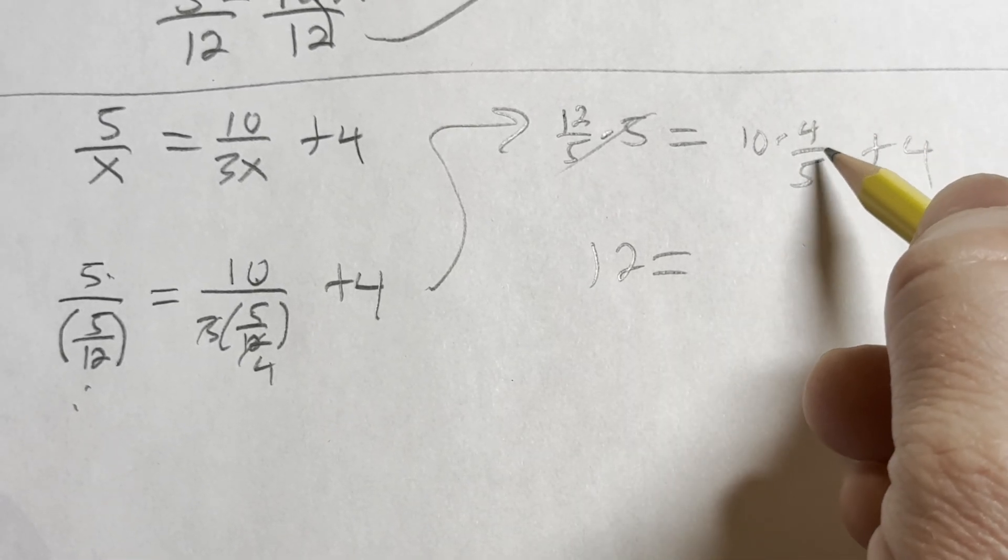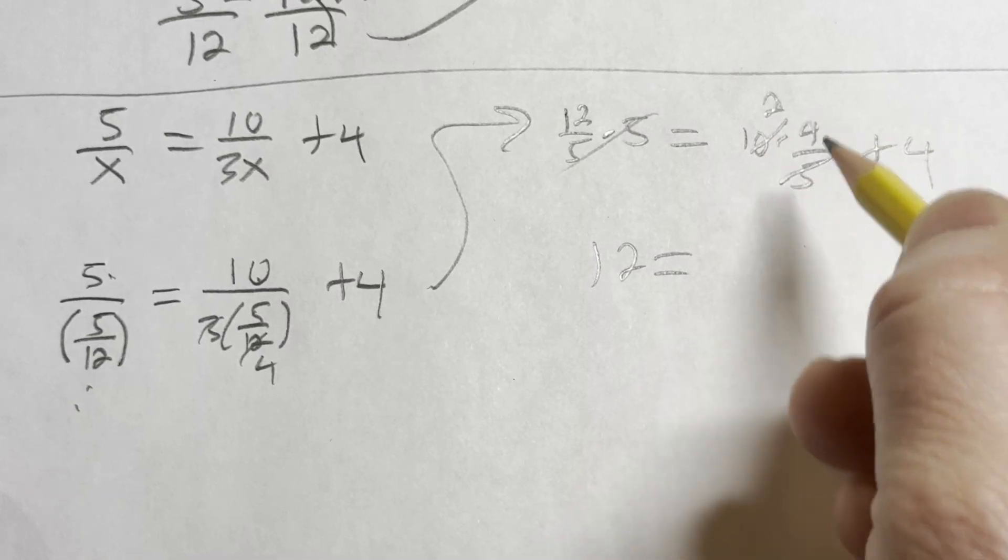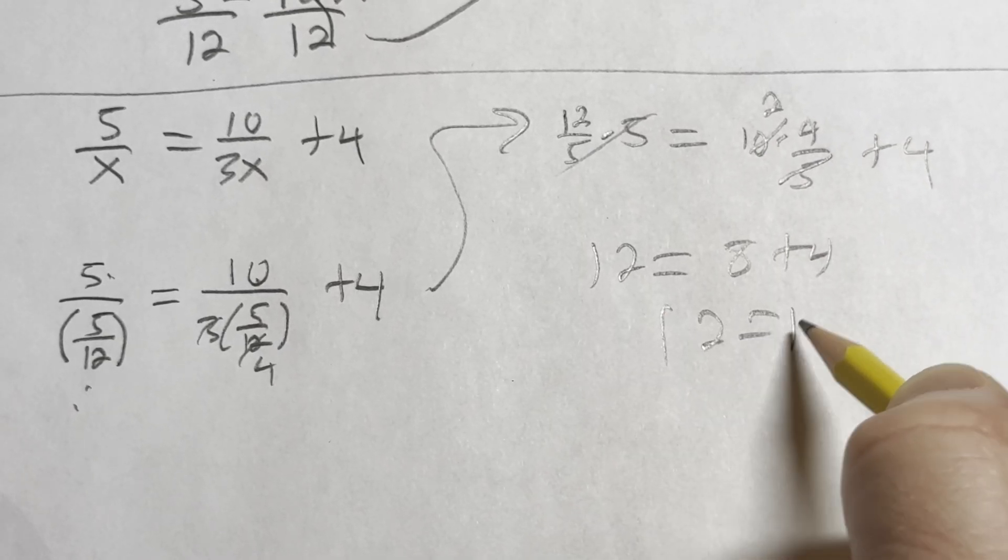So 12 equals, this goes into 10 twice. 2 times 4 is 8. 12 equals 12. So grinding it out. Hardcore mathematics.